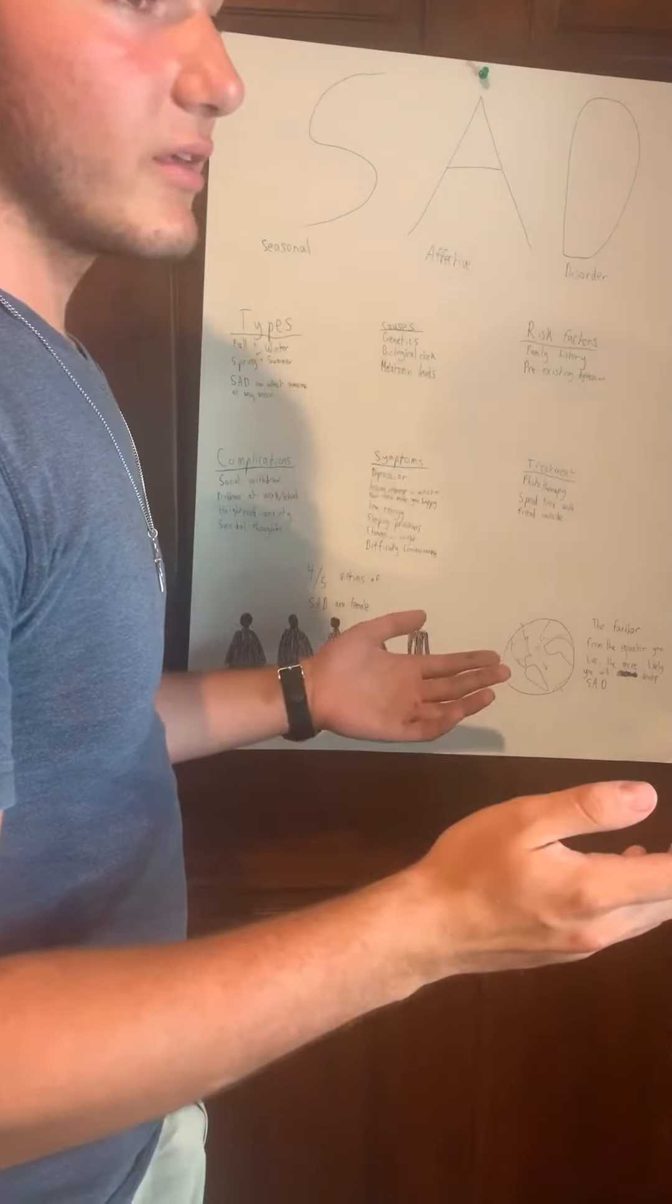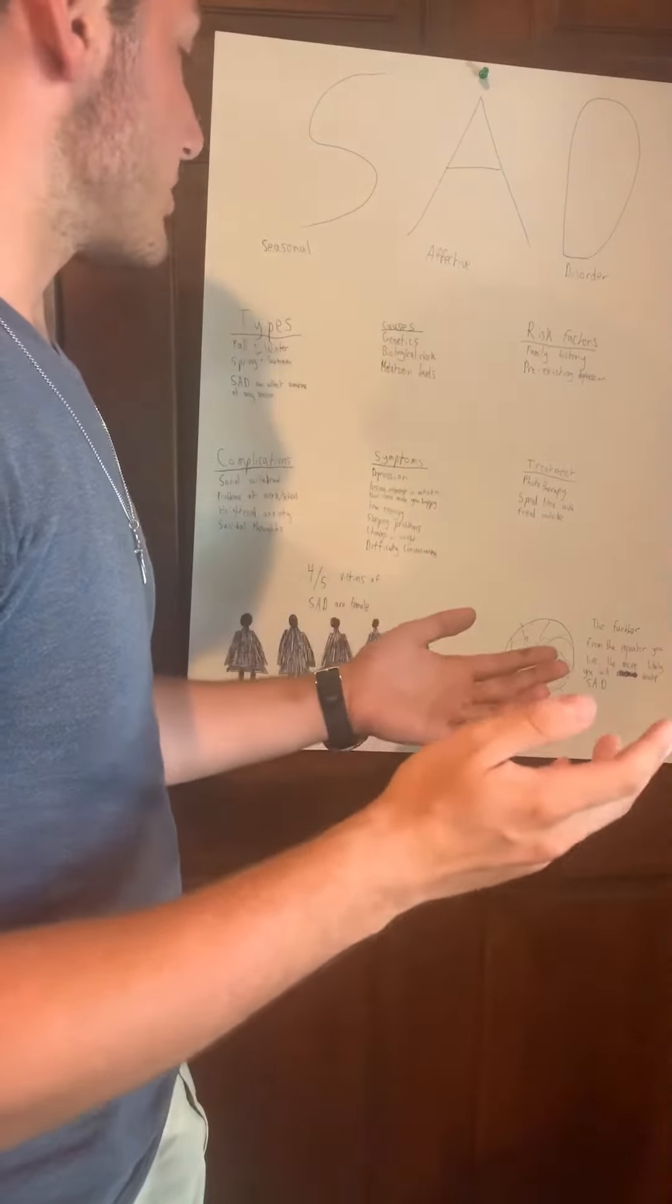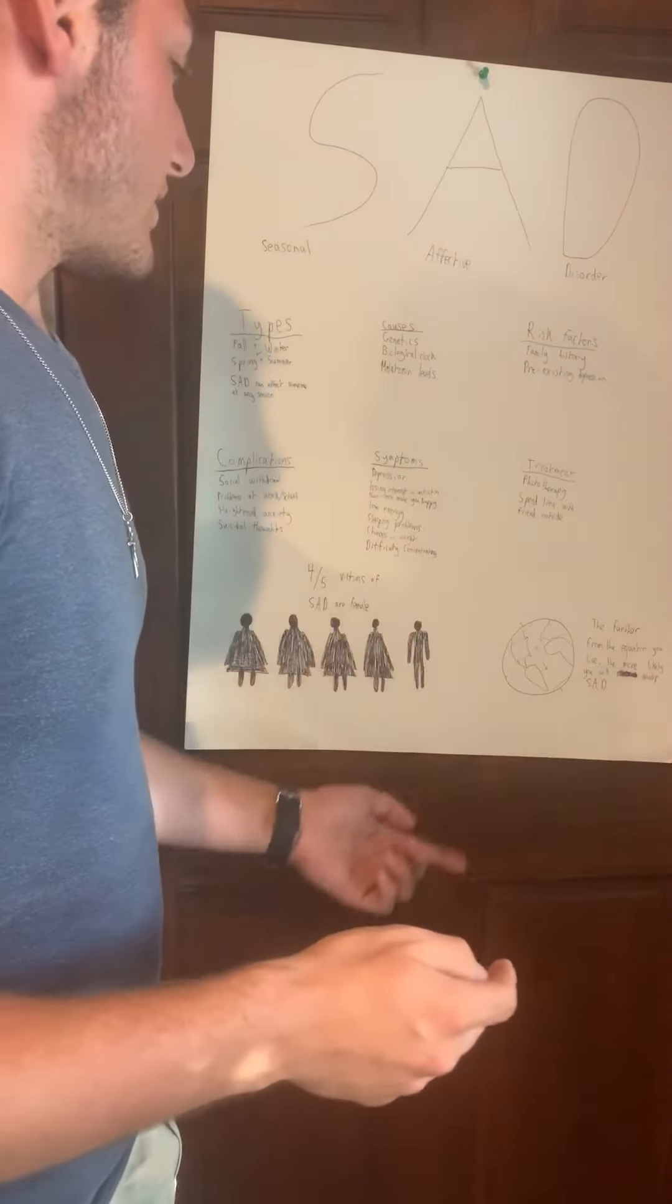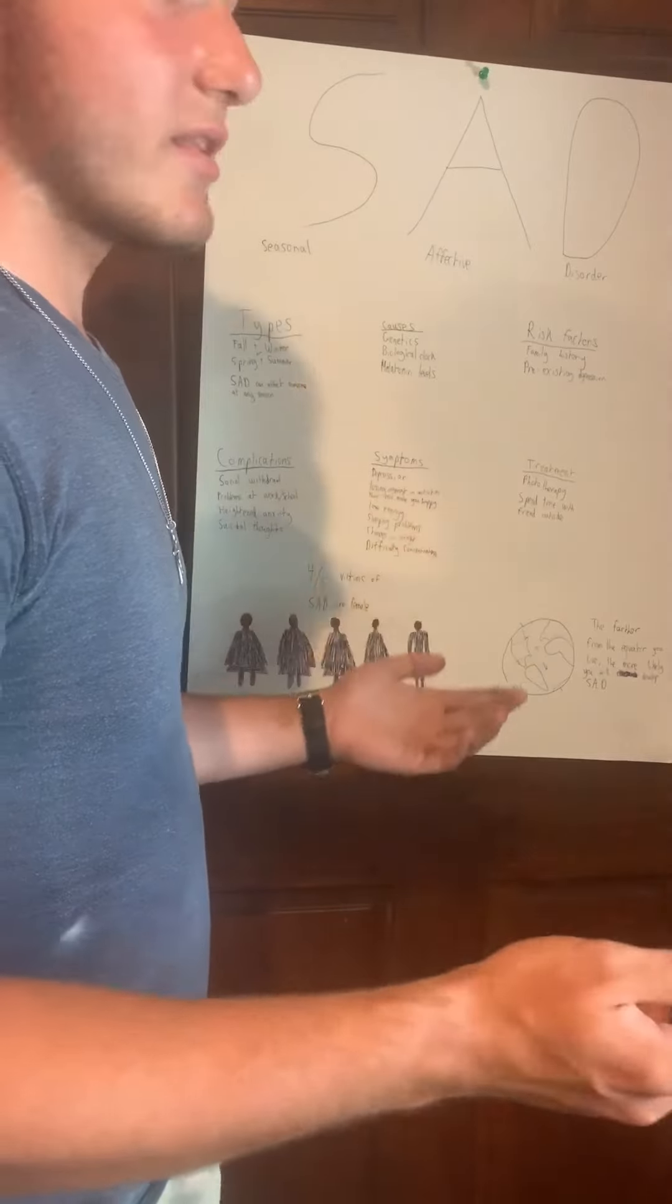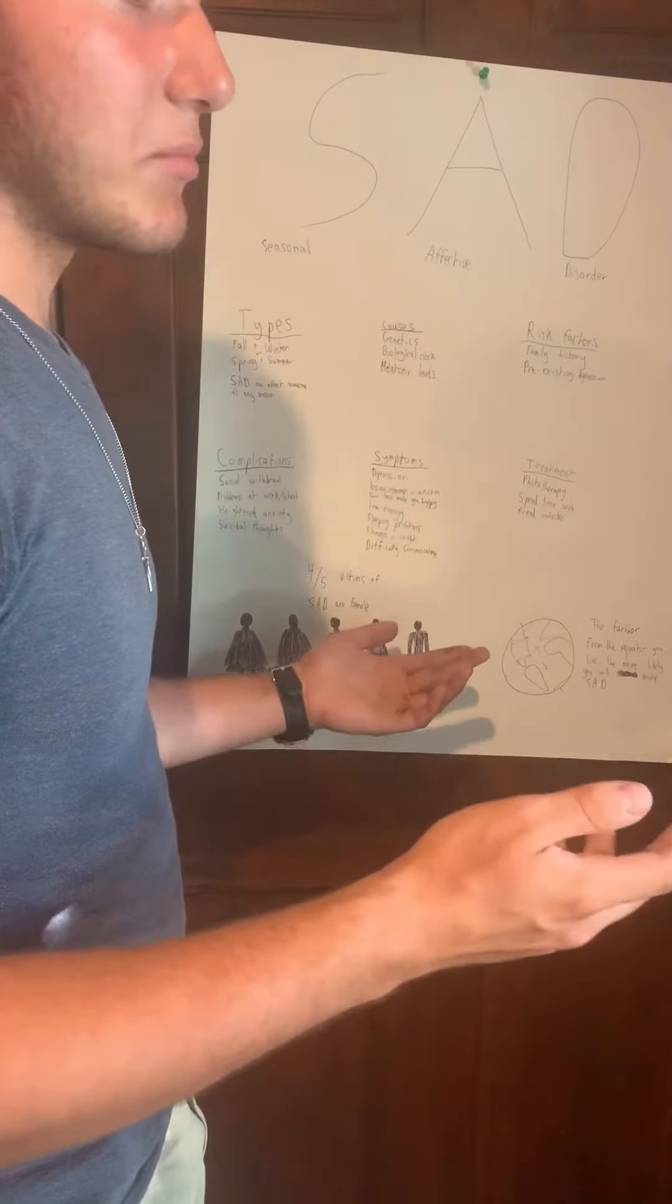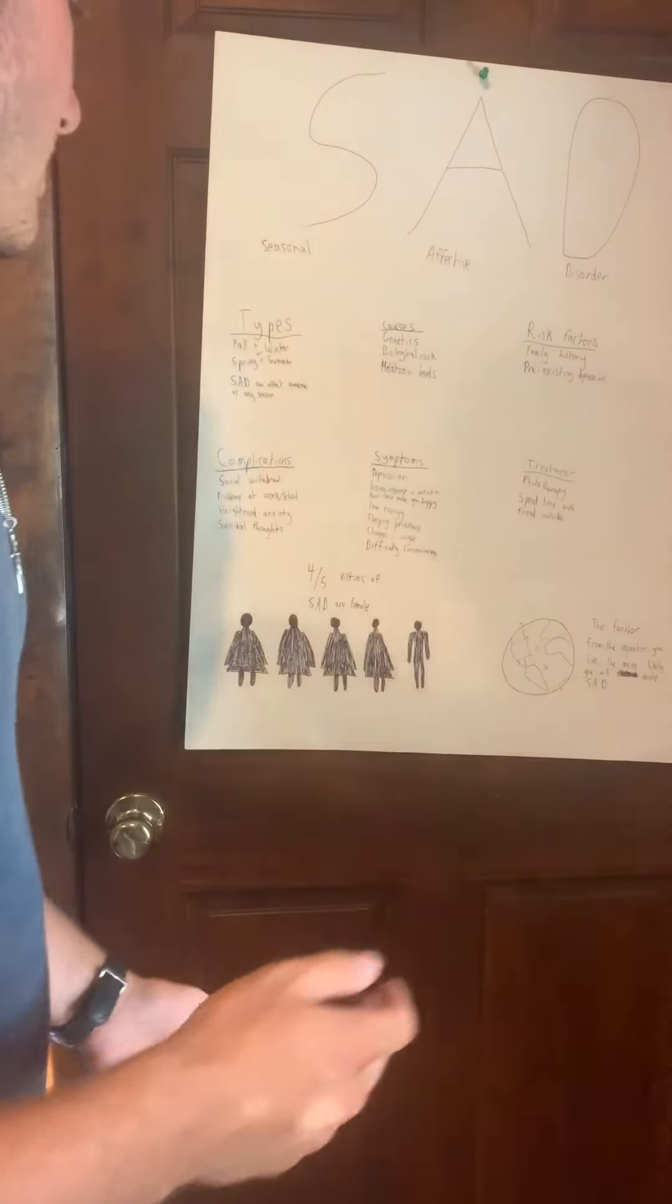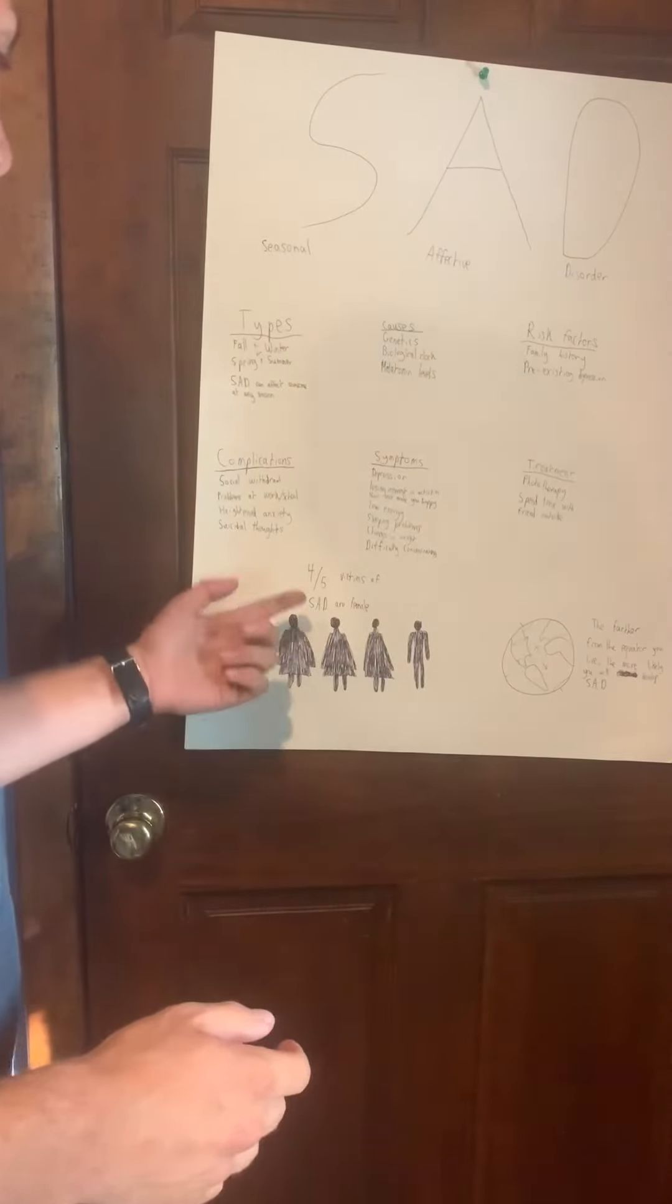And there are different ways of treating it, but the most popular is known as phototherapy, which is where you are subjected to different amounts of light and it tries to balance the amount of light that you've received to get your brain into the season so it can properly release the hormones that you're supposed to be releasing.